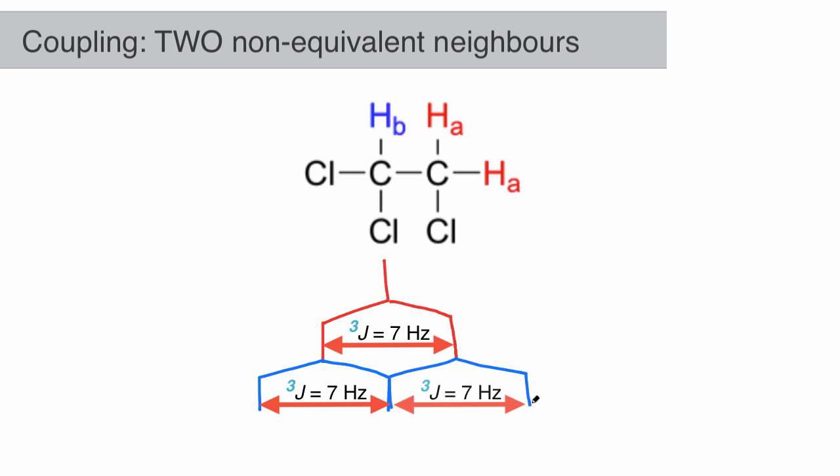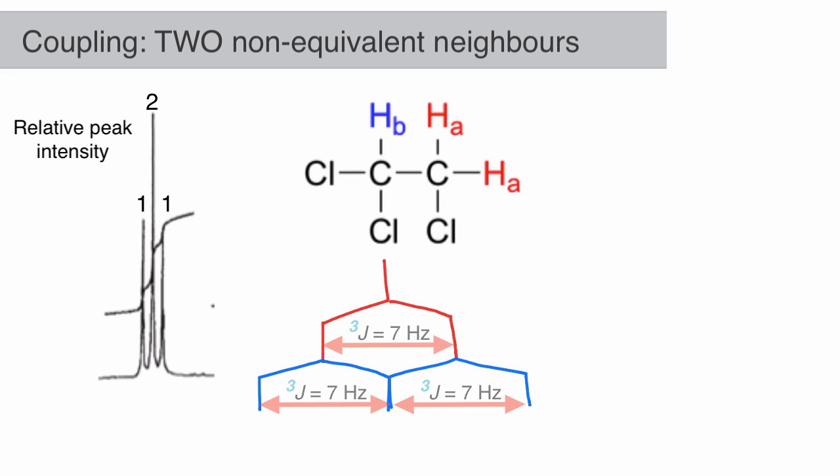As the peaks in the middle overlap, they create a peak twice the height as the outside two. The result is a triplet with 1:2:1 relative peak intensity. Another way to get at this triplet answer is to analyze the possible combinations of spins for the two HA atoms.